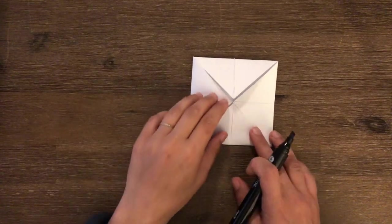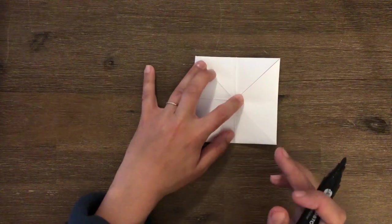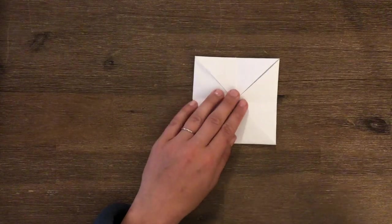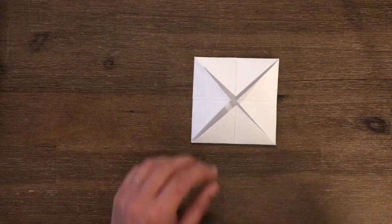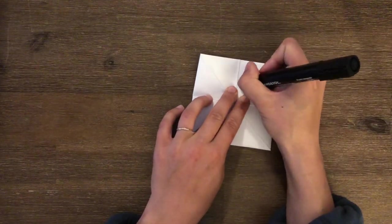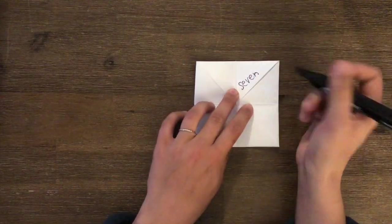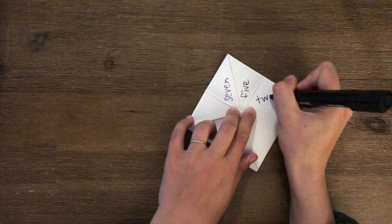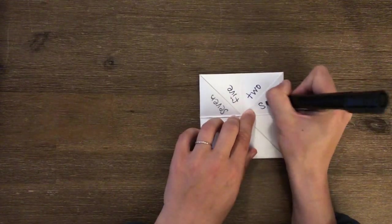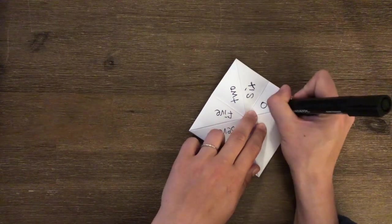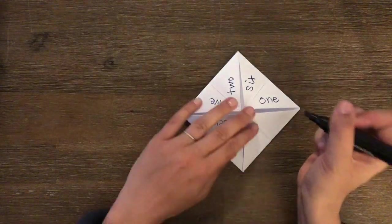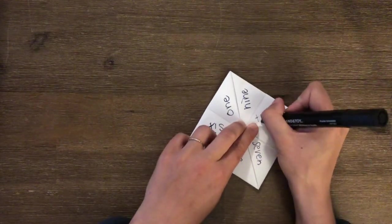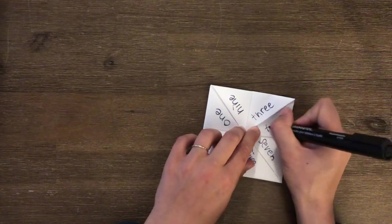I want you to write any number you want. I would suggest a number smaller than 10, but you can choose whichever. But instead of writing it in our numerals, in our numbers, I want you to write the word. So I'm going to write the word 7, the word 5, the word for 2, the word for 6, 1, 9, 3, and I'll end with the number 10.